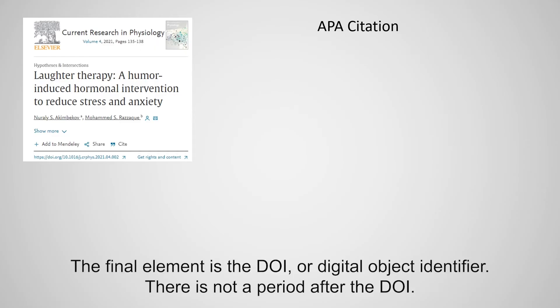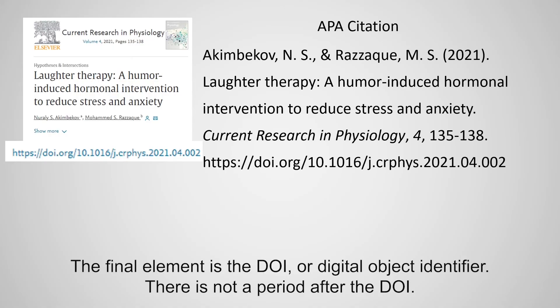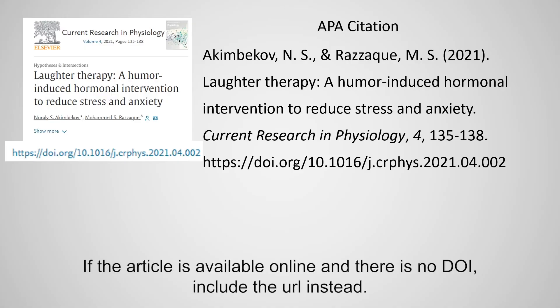The final element is the DOI, or digital object identifier. There is not a period after the DOI. If the article is available online and there is no DOI, include the URL instead.